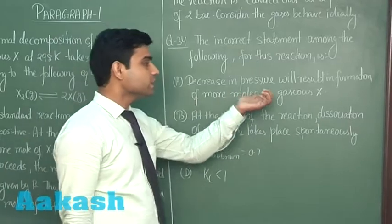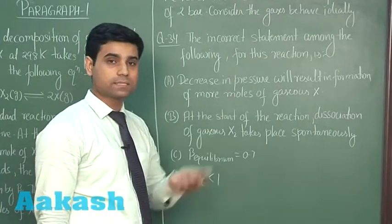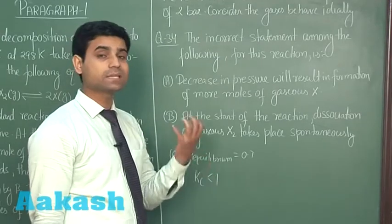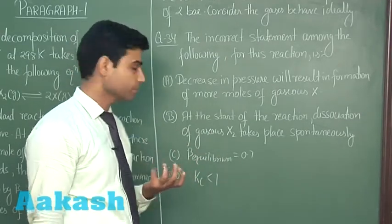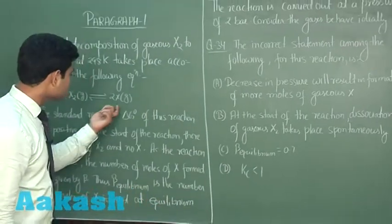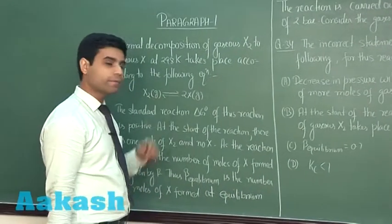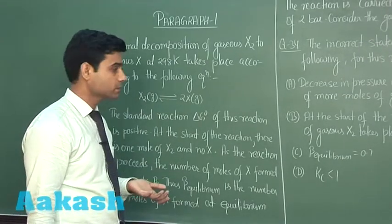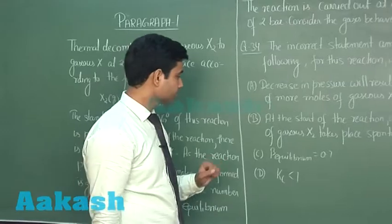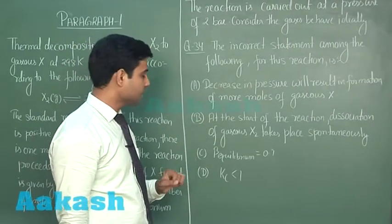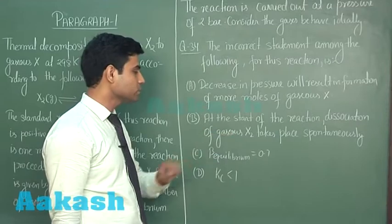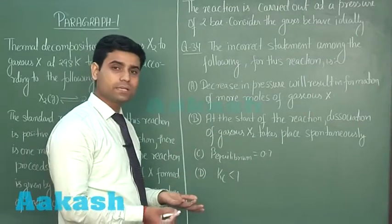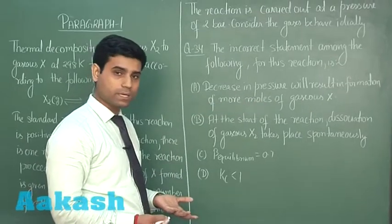For option A: according to Le Chatelier's principle, when pressure decreases, the reaction shifts toward the side with more moles of gas. Since gas X has more moles in the forward direction, the reaction shifts forward, forming more X. So option A is a correct statement. For option B: at the start of the reaction, dissociation of X₂ will definitely take place spontaneously. So option B is also correct.